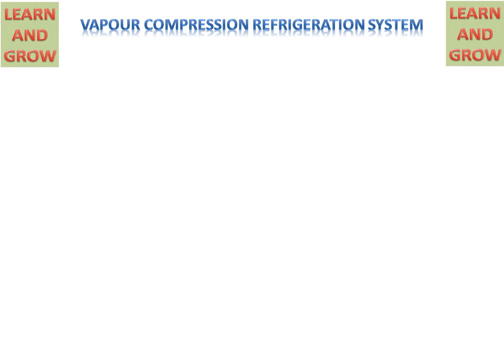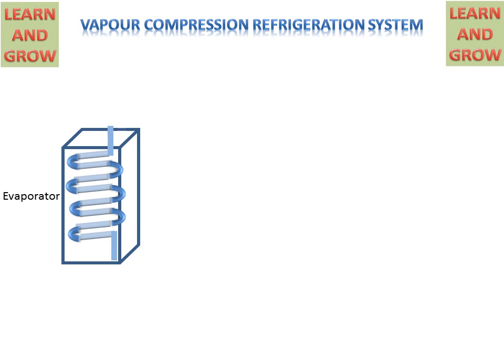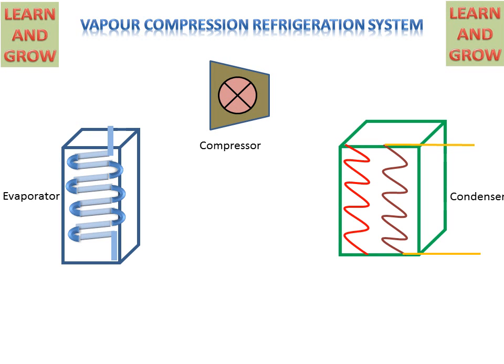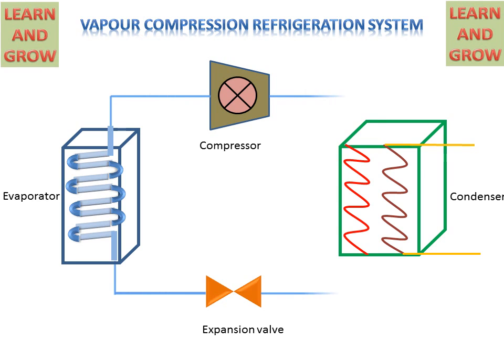Firstly, we will discuss about all the parts of the Vapour Compression Refrigeration System. We have an Evaporator, a Compressor, Condenser, and Expansion Valve. These 4 are the basic components of the Vapour Compression Refrigeration System, and these all are connected with the help of pipes.